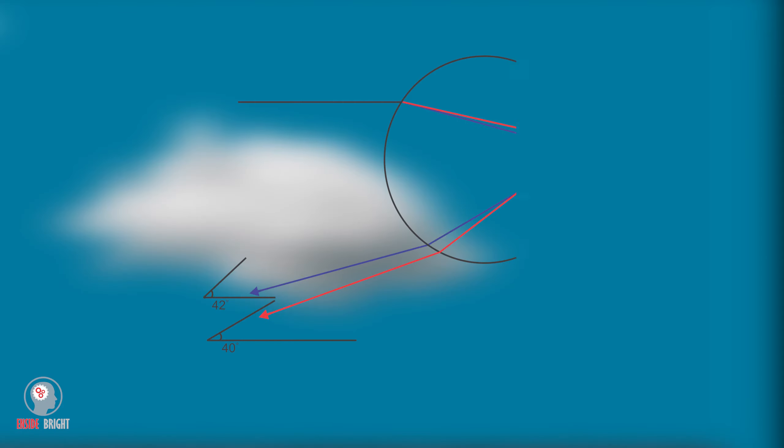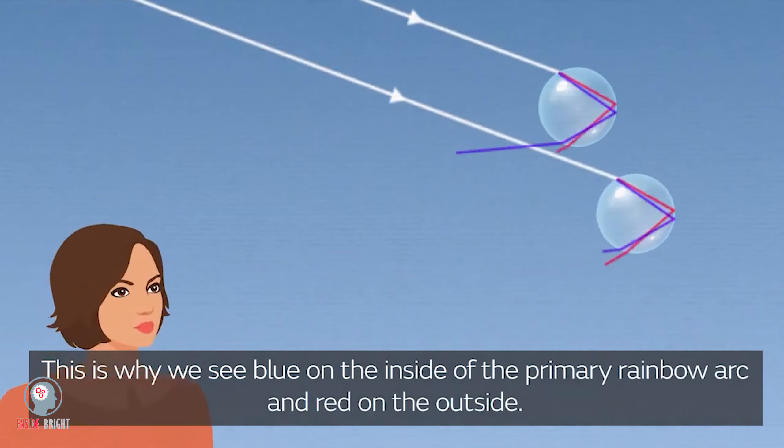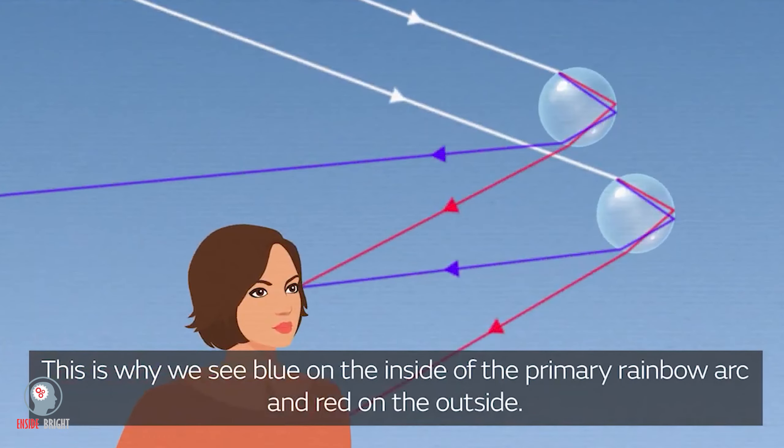Red color is reflected at an angle of 40 degrees while blue color is reflected at an angle of 42 degrees. That is why blue color appears at the bottom and red color appears at the top of the rainbow.